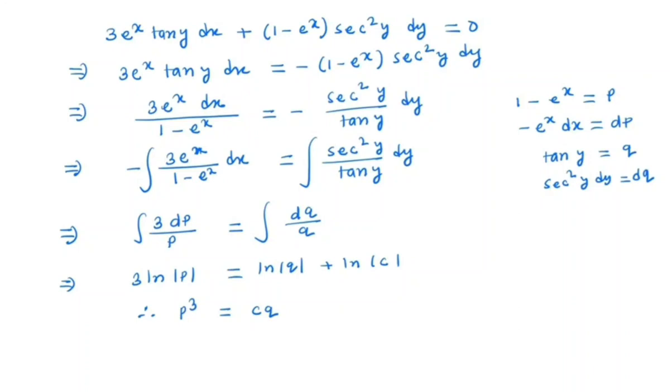So now put this value p and q. So what is p? 1 - e^x. Power 3 is equal to c times q, which is tan y. So this is the general solution of the given differential equation. Thank you.